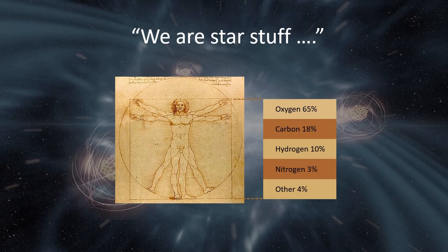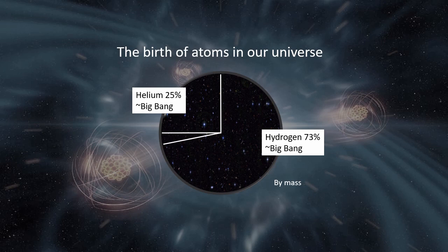To understand Sagan's quote, let us look at the atomic composition of the universe first. Amazingly, of all the elements, the gases helium and hydrogen make up a whopping 98% of the ordinary matter in our universe. Where did these two elements come from?